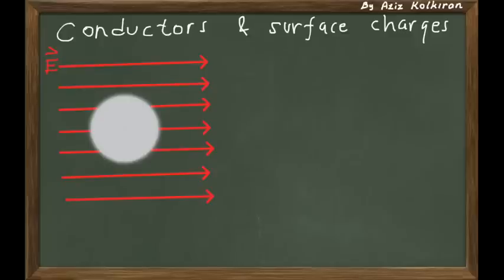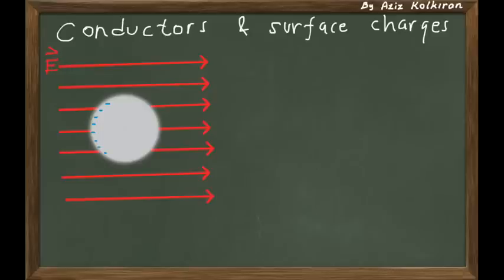If you put these electrons inside an electric field, when they experience this electric field, they will see a force on them. Because whenever you put a charged particle in an electric field, there will be an electrostatic force — in the direction of the electric field for positive charges, and opposite for negative charges. So as soon as you put this metal, some of the electrons will be accumulated on the left-hand side, because electrons will be attracted to the left if the electric field is to the right.